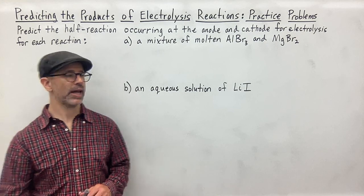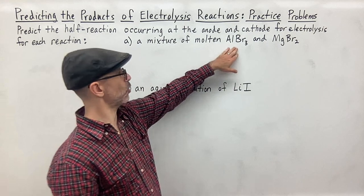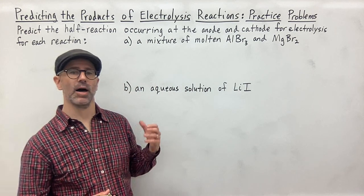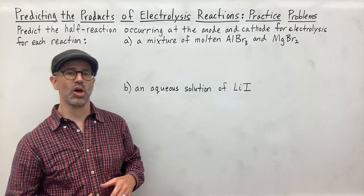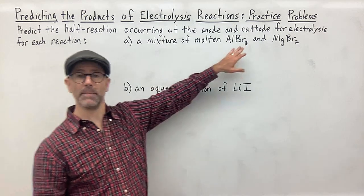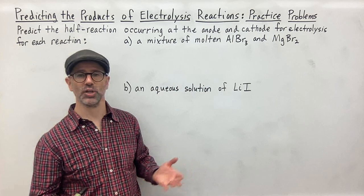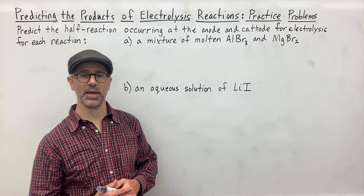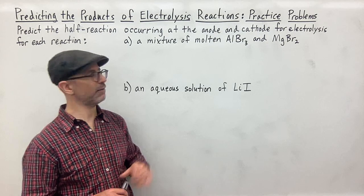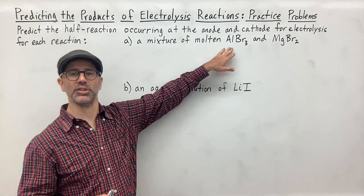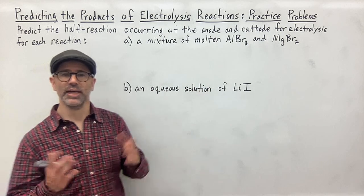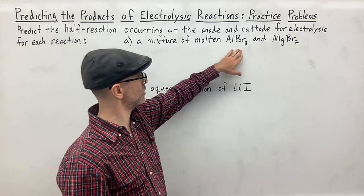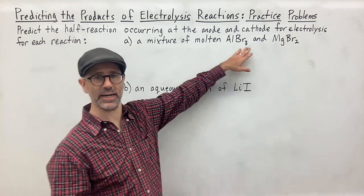For part A, we're given a mixture of molten aluminum bromide and magnesium bromide. The first thing to notice is that we're talking about molten substances, not aqueous. Molten just means that the substances are melted. Aqueous means dissolved in water — here we have ionic substances as a melted liquid mixture of these two ionic compounds.